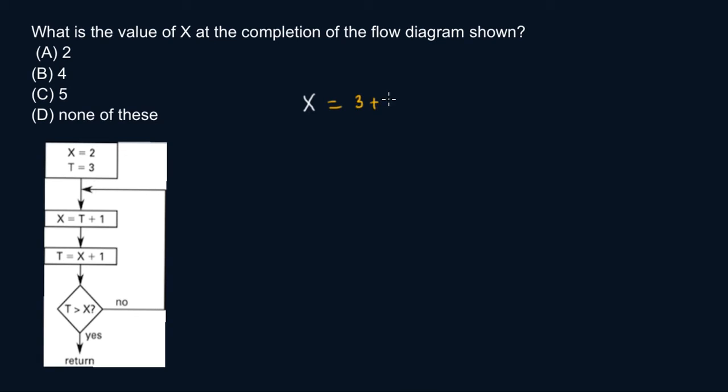Following up our flowchart here, t is equal to x plus 1. Don't use the old value of x. You got to follow through - your value of x is 4, so you got to use 4 plus 1. This is equal to 5.